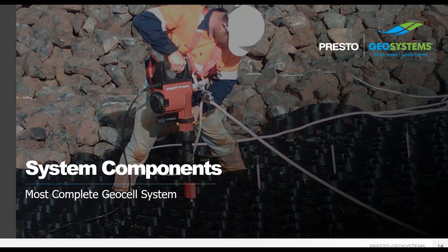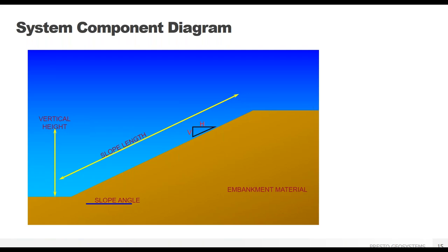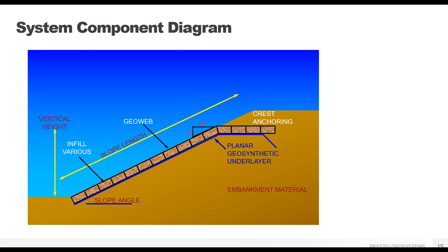The system components are all of the supporting accessories that help the GeoWeb protect the slope. Here's a simplified diagram showing how the different components interact with the GeoWeb to form a complete system. We have our slope with some standard dimensions. The first thing to go down is the planar geosynthetic layer, which can be a geotextile, geomembrane, geogrid, or any similar product. Then the GeoWeb is put in place. Note how the GeoWeb has a horizontal turn near the top of the slope — this is important for crest anchorage and for erosion control.